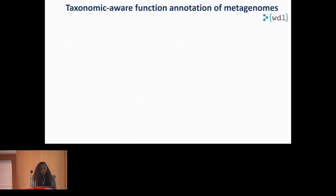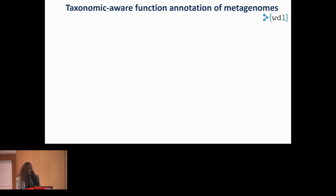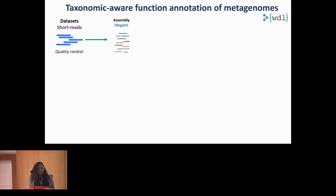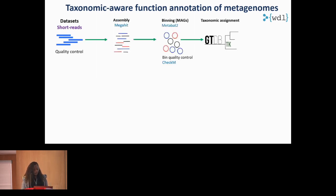I'll briefly walk you through the metapipeline. This pipeline integrates de novo genome reconstruction, taxonomic profiling, and functional annotation. It takes as input Illumina short reads, performs assembly using MEGAHIT, bins contigs into metagenome-assembled genomes using MetaBAT, and performs taxonomic assignment using GTDB.